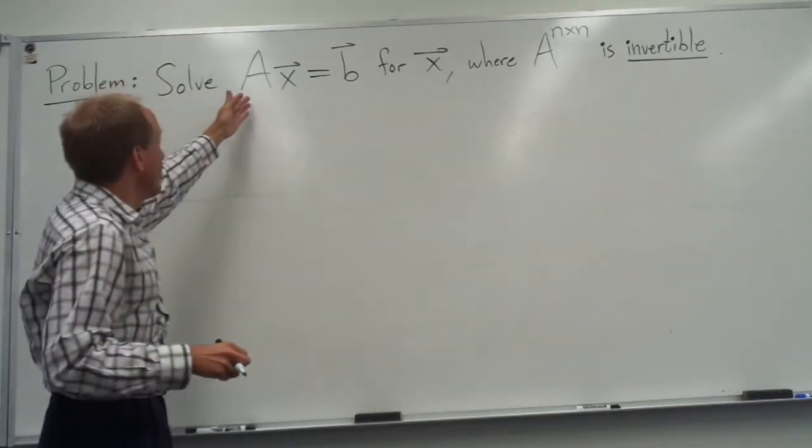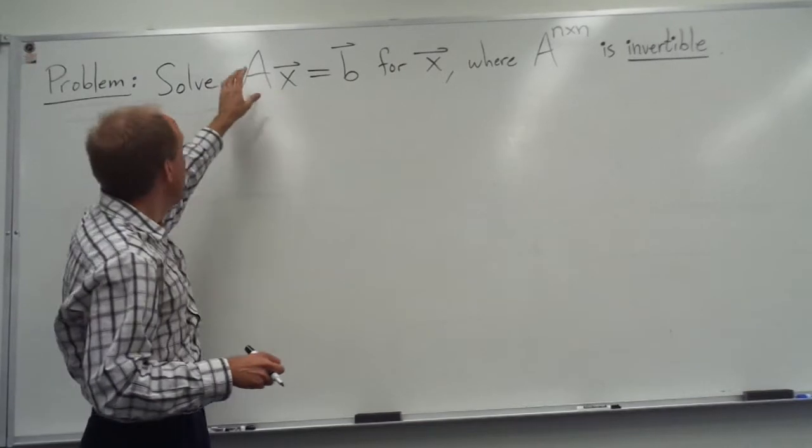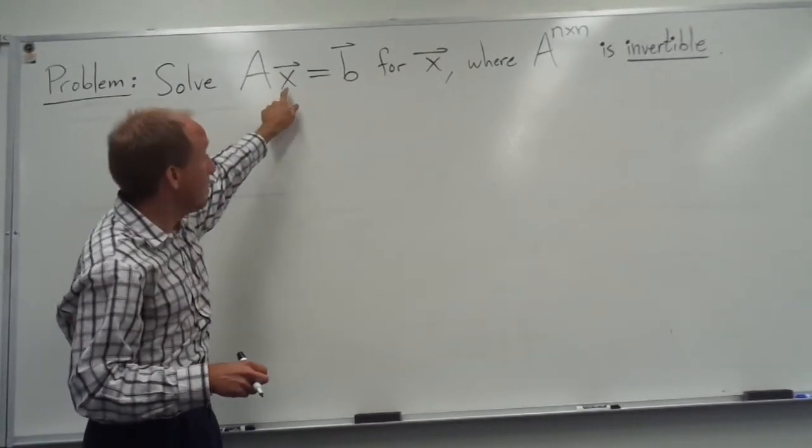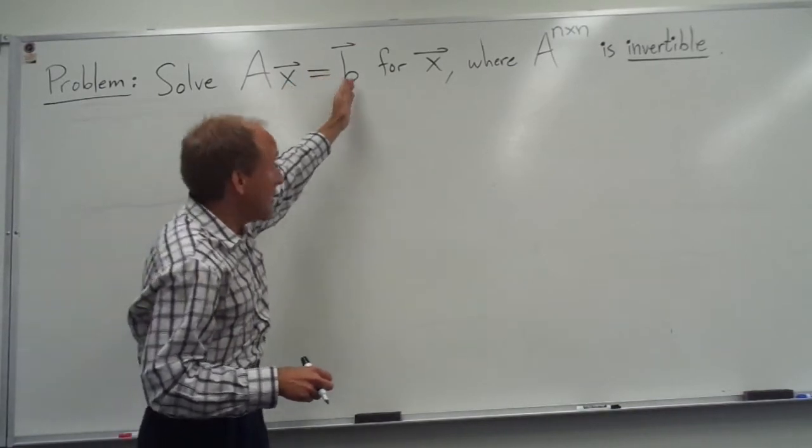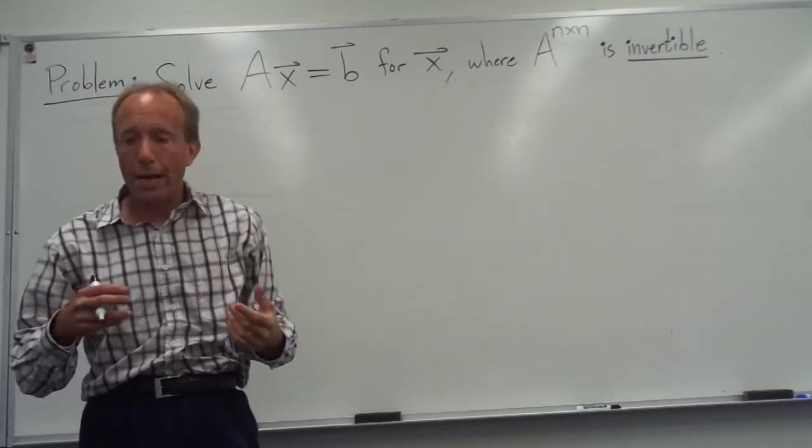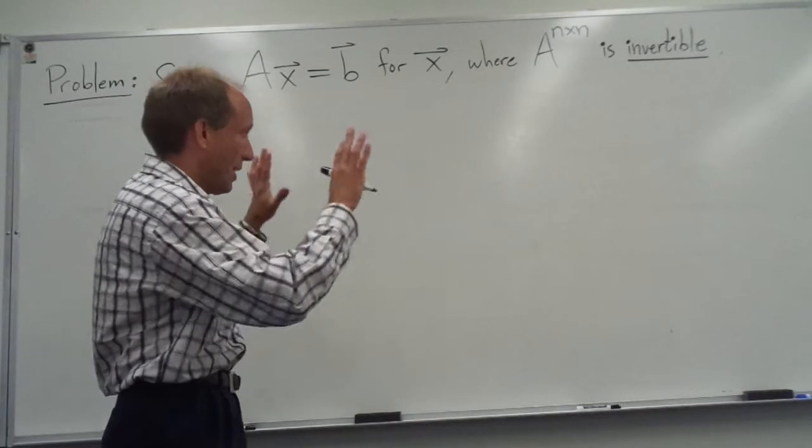So here's the setup. Suppose you have the usual linear system. We've written this down many times, right? The coefficient matrix A, X has my unknowns in it. This is what I'm trying to solve for. And B is on the right-hand side. And so this linear system, of course, it either has no solutions, one solution, or infinitely many solutions.